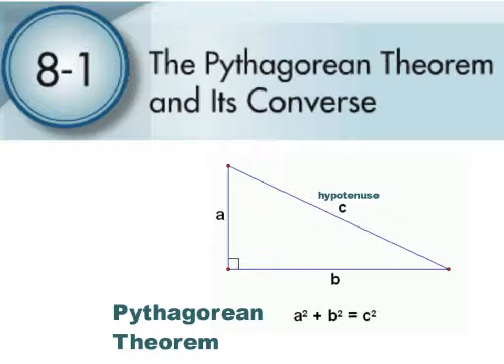All right, today we're going to talk about the Pythagorean Theorem. I'd guess that you probably have heard of the Pythagorean Theorem, probably have used the Pythagorean Theorem, so we're going to move through this pretty quickly. First of all, the Pythagorean Theorem is a theorem that helps you find the side lengths in a right triangle. And this rule, a squared plus b squared equals c squared, is the Pythagorean Theorem.